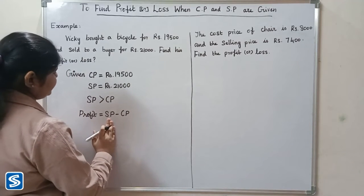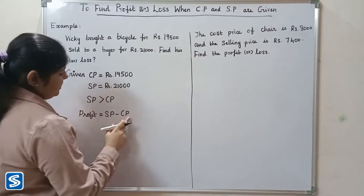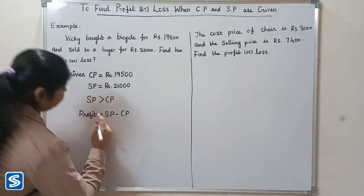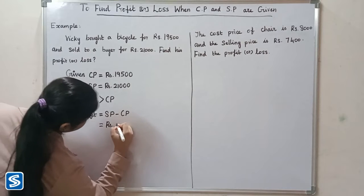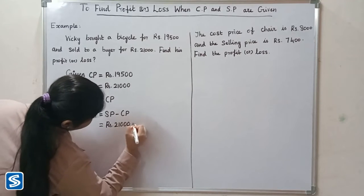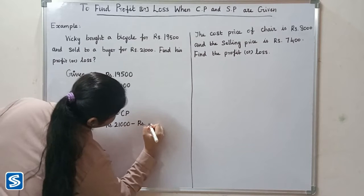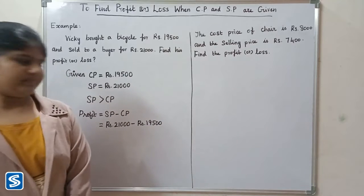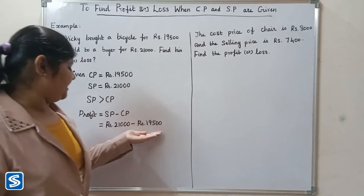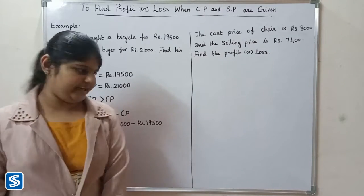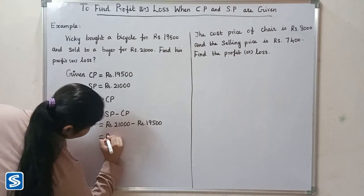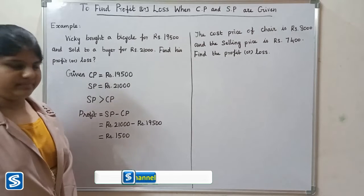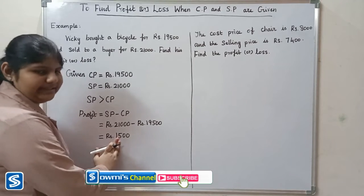The selling price given is rupees 21,000 and the cost price is rupees 19,500. So profit is equal to rupees 21,000 minus rupees 19,500, which equals rupees 1,500. Therefore, profit is equal to rupees 1,500.